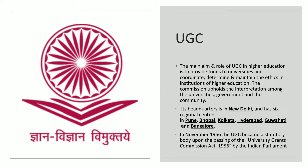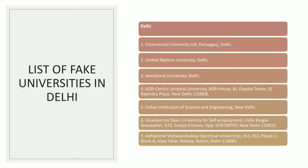Next, let's look at the list of fake universities. In Delhi there are seven fake universities. The state with the most fake universities is Uttar Pradesh with eight. Delhi has seven. In other states the numbers are two or one each.